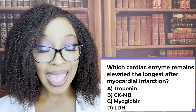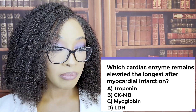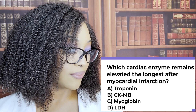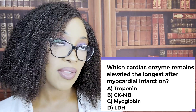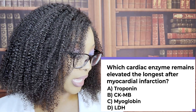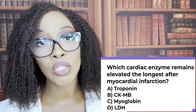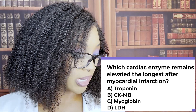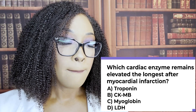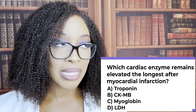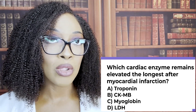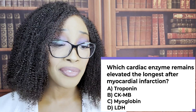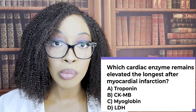Which cardiac enzyme remains elevated the longest after myocardial infarction? A, troponin; B, CK-MB; C, myoglobin; or D, LDH? The correct answer is A, troponin — it stays elevated for about 10 to 14 days. CK-MB normalizes in about 48 hours. Myoglobin rises quickly but is nonspecific since it can appear with any muscle damage, not just the heart. LDH is less specific than troponin or the others.